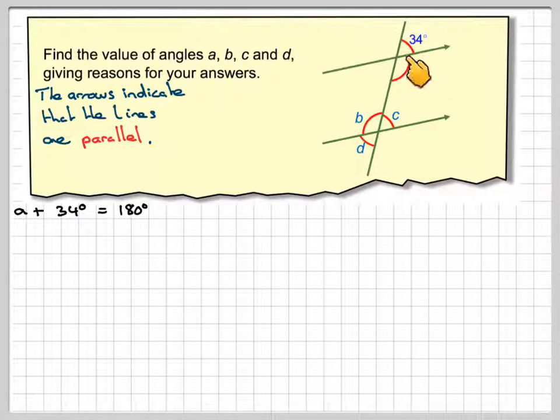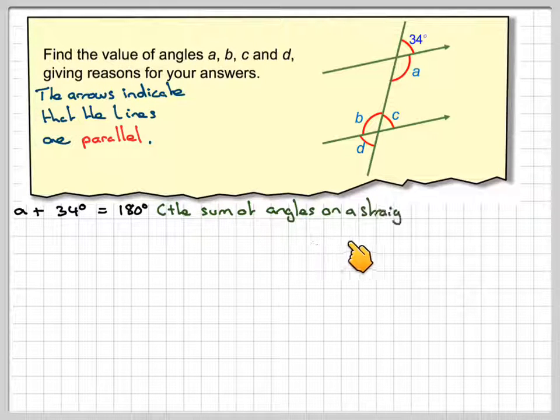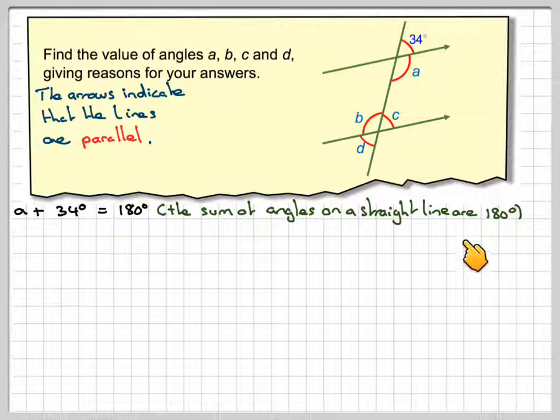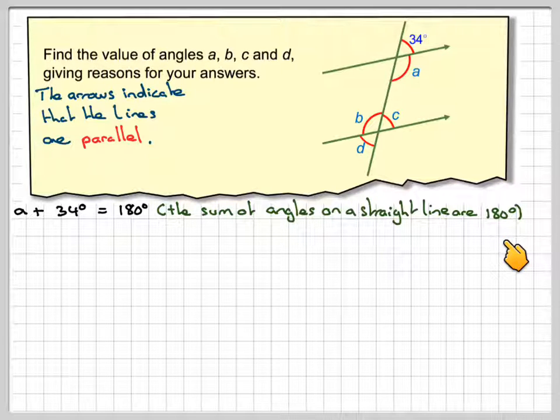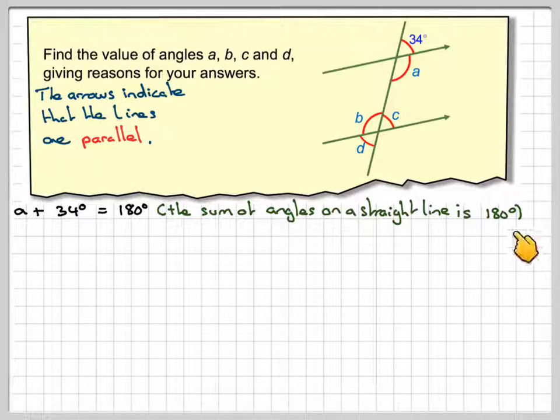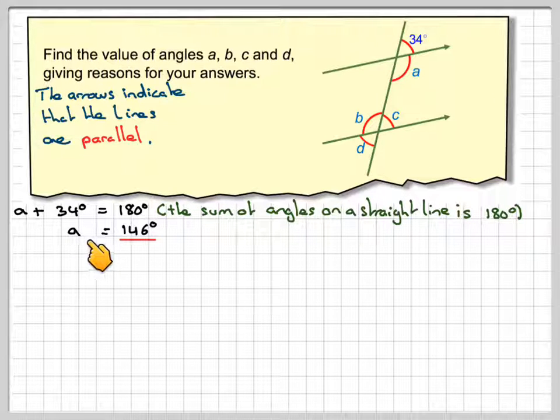In the first case, we've just got these two angles adding up on a straight line. So we can say that A plus 34 equals 180 degrees, and the reason being the sum of the angles on a straight line is 180 degrees. So A will be equal to 180 minus 34, which is 146.